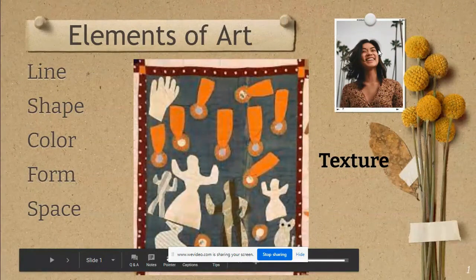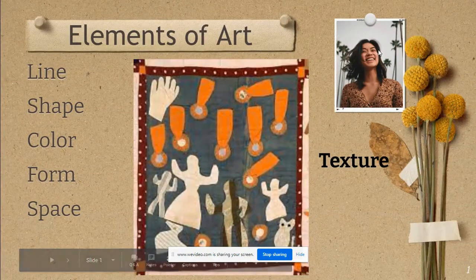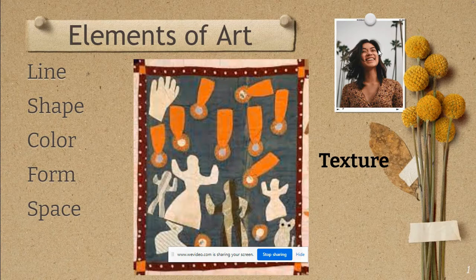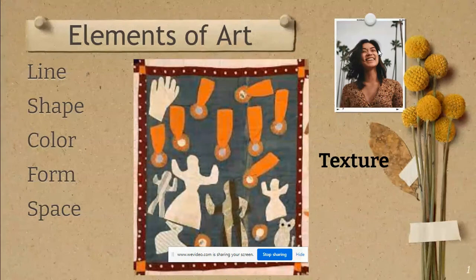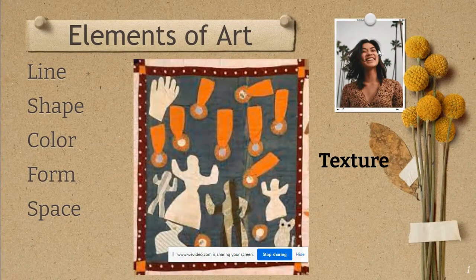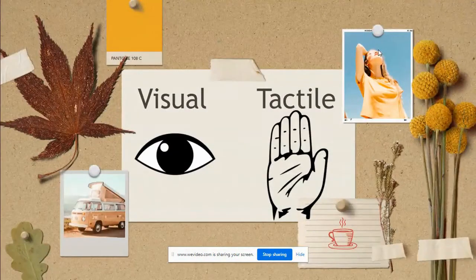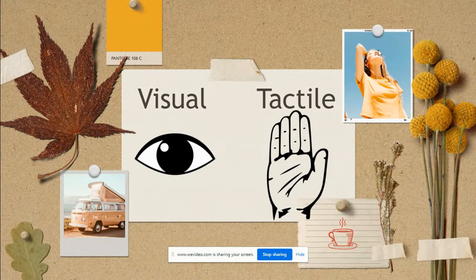The elements of art are line, shape, color, form, space, and texture. So today we're going to talk about texture. In art, there are two types of texture. There's visual texture, texture that you can see, and tactile texture, texture that you can feel.